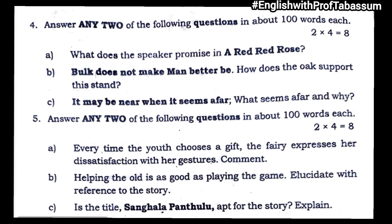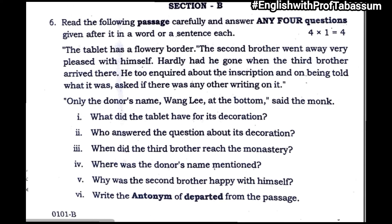Now let's move to Section B. Read the following passage carefully and answer any four questions in a word or a sentence each. The passage is about a tablet with a flowery border. Q1: What did the tablet have for its decoration? — The tablet has a flowery border. Q2: Who answered the question about its decoration? — The monk. Q3: When did the third brother reach the monastery? — After the second brother had hardly left the monastery.